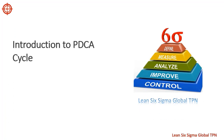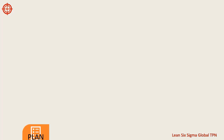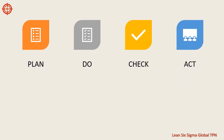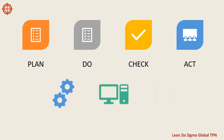Hello and welcome to this video about the PDCA cycle. PDCA stands for Plan, Do, Check, Act. And it is a continuous improvement framework that can be applied to a wide variety of processes, systems, and projects.